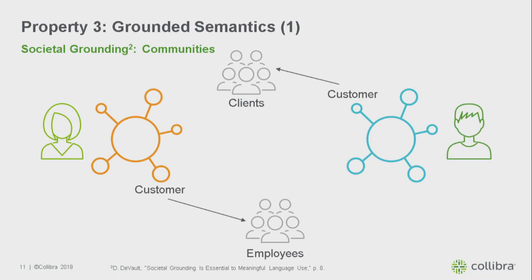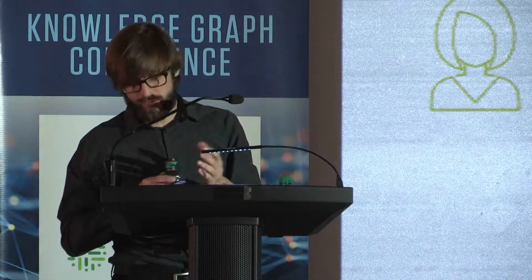The way to alleviate that is to create communities. A community is like a linguistic silo where people have a certain idea of what the meaning is of certain terms, and that's totally fine. That's nicely incorporated into Collibra with communities and domains and specific knowledge.